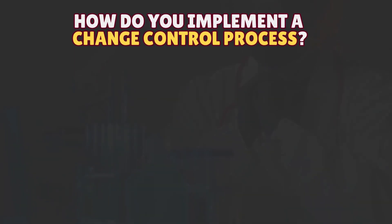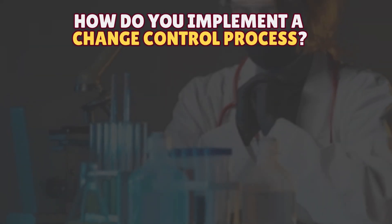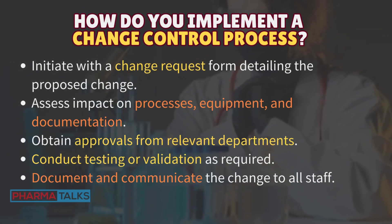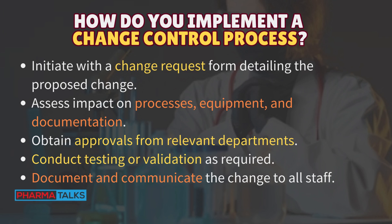How do you implement a change control process? Initiate with a change request form detailing the proposed change. Assess impact on processes, equipment, and documentation. Obtain approvals from relevant departments. Conduct testing or validation as required. Document and communicate the change to all staff.